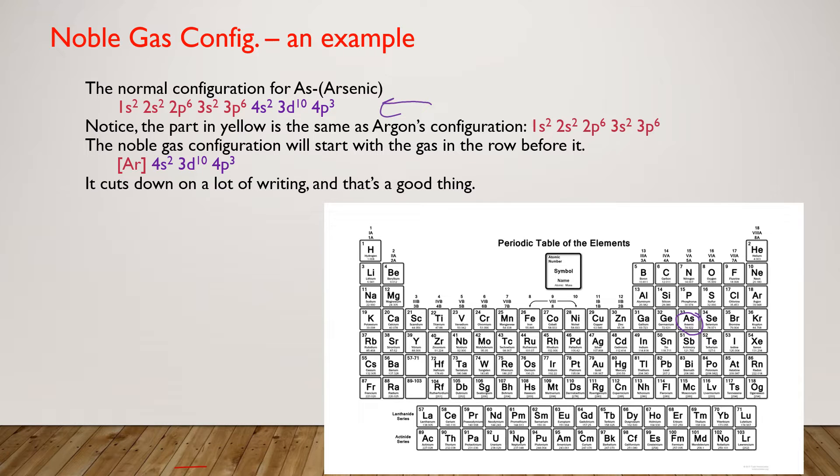What you should notice is that the part in red is the same as argon's configuration. Here is argon on your periodic table, and argon's configuration is 1s2, 2s2, 2p6, 3s2, and then 3p6.